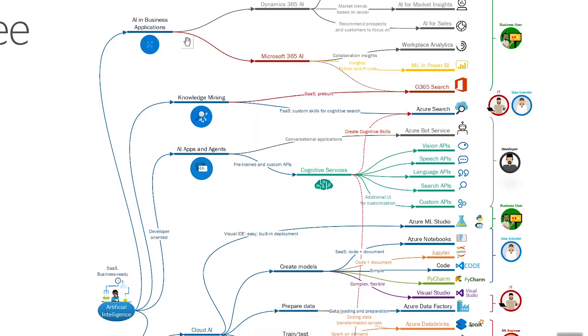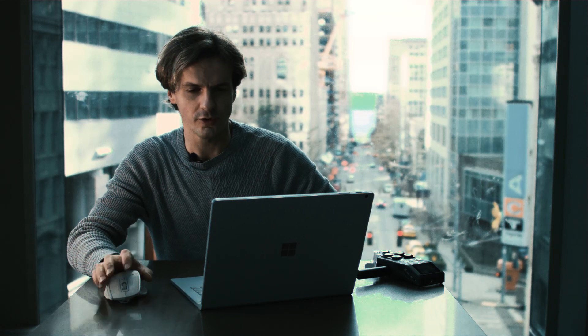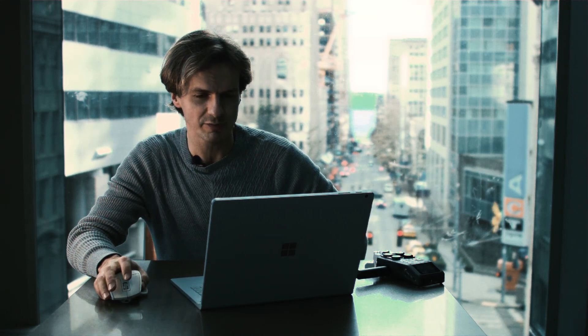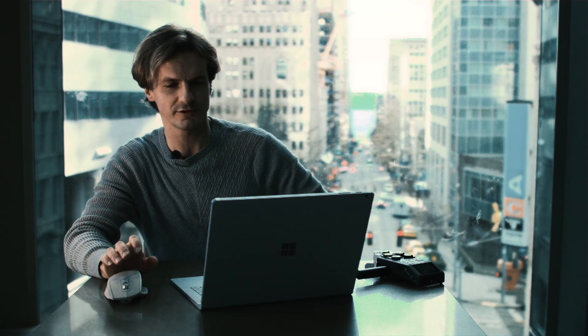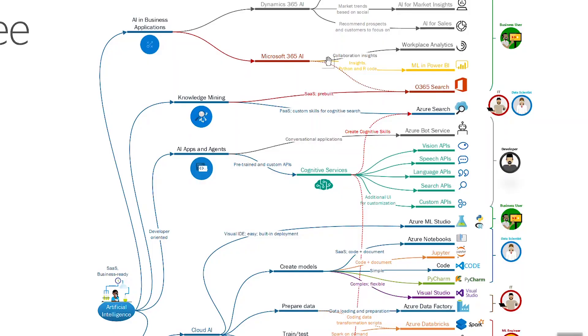The second one is Microsoft 365, represented by Office 365 search and machine learning in Power BI. In Power BI you can use Python or R languages to make predictions or better understand your data sets. Workplace Analytics also allows you to understand how different teams work and what changes in terms of teamwork.